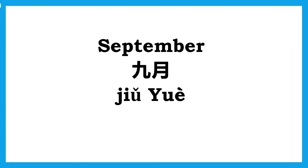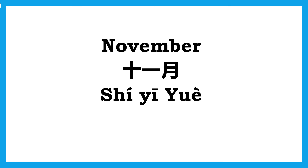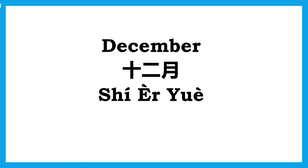September is Jiu Yue. October is Shi Yue. In Mandarin, November is Shi Yi Yue, and December is Shi Er Yue. So basically what you have to do is put the number and month together, and that's it.